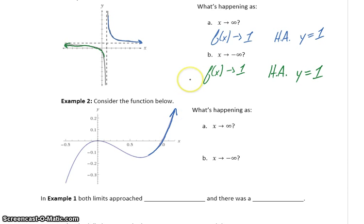our function value is just going to keep increasing without bound. So f of x is approaching infinity, and there is no horizontal asymptote. Because there's no line we're going to approach without crossing, this will just continue to increase.